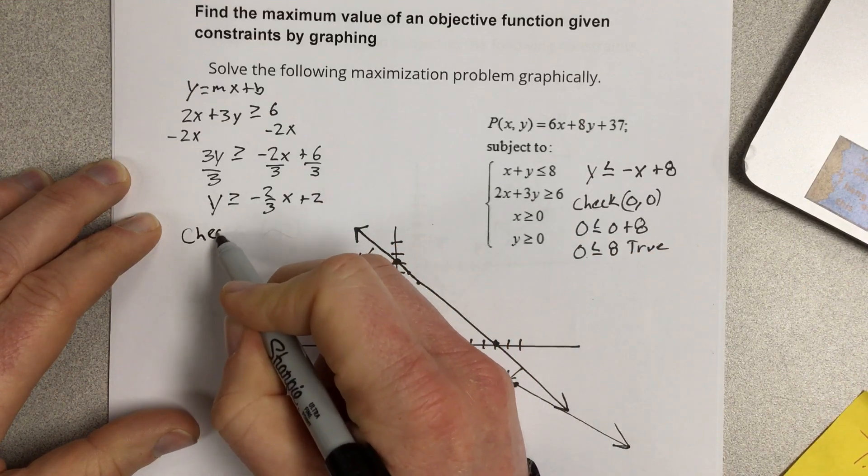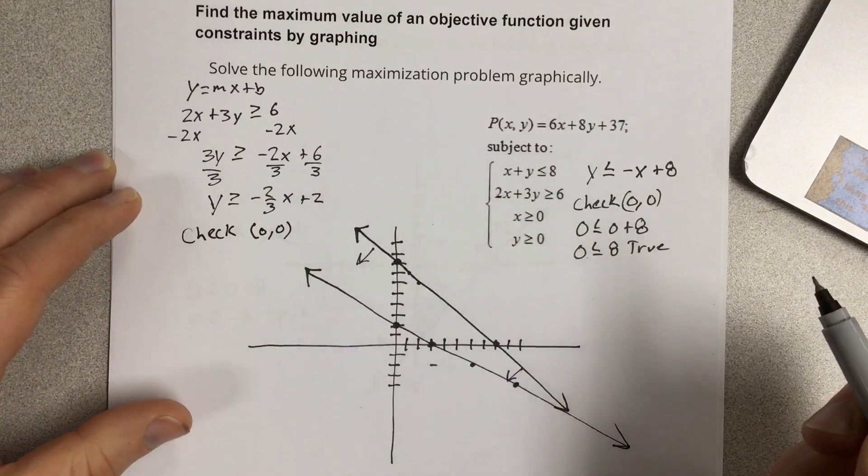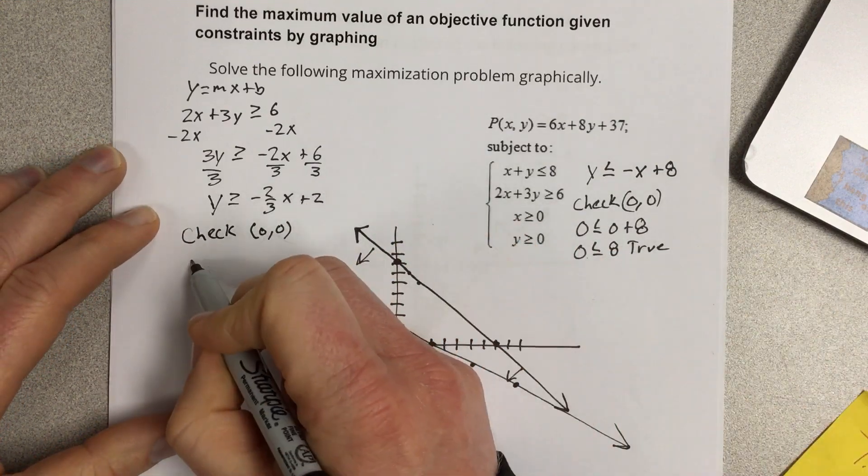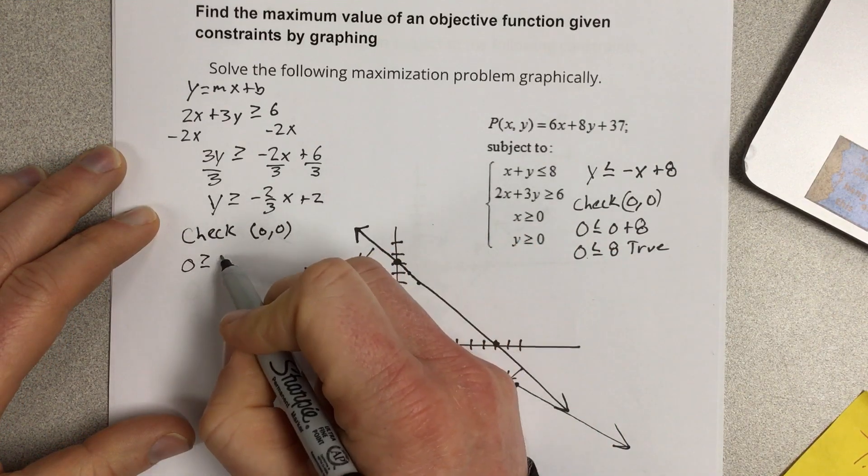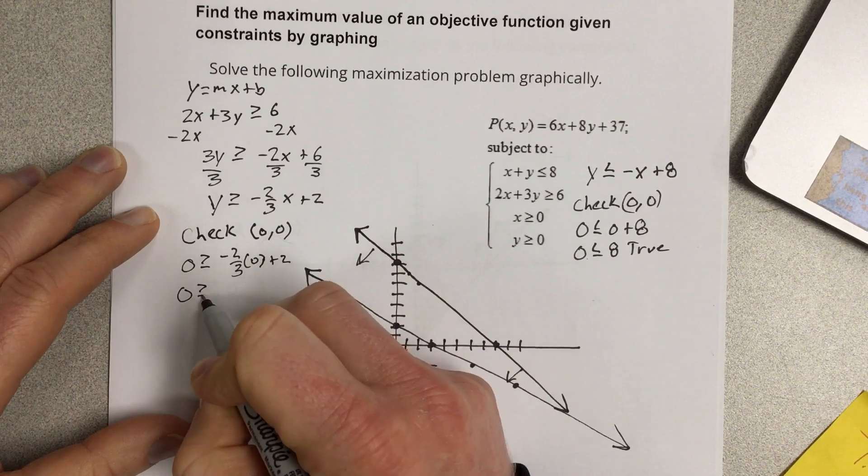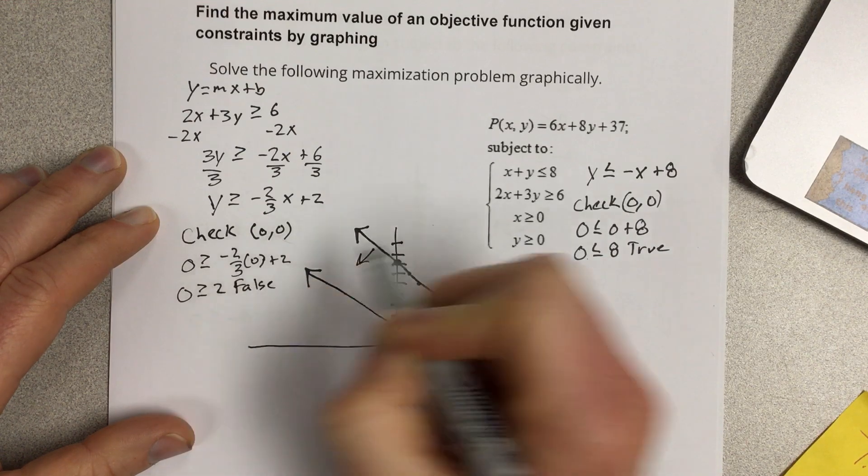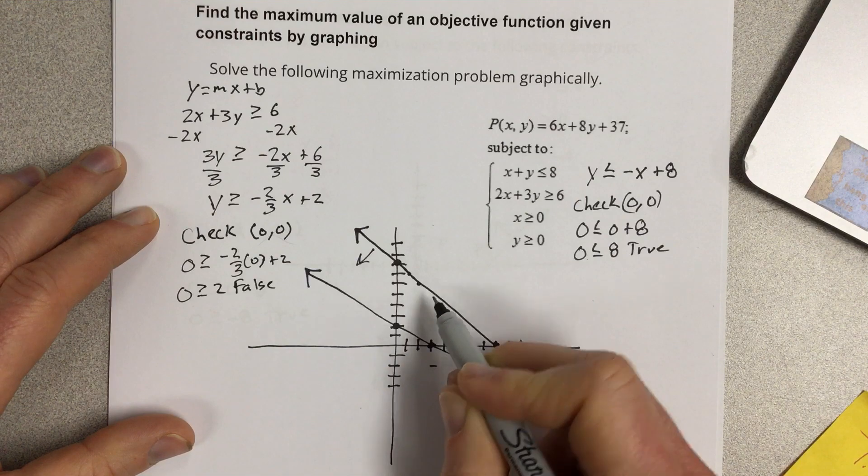It says we're going to shade, it says y greater than that, so we're going to be shading above. But we can check that with 0, 0. And that would be 0 greater than or equal to negative 2 thirds times 0 plus 2, is 0 greater than or equal to 2. That is false. So we're shading away from 0, 0 which is here. We'll be shading in this direction.